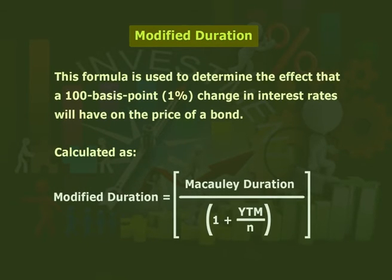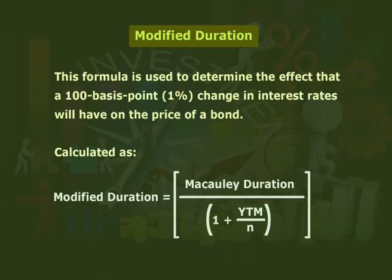This formula is used to determine the effect that a 100 basis points (one percent) change in interest rate will have on the price of a bond. Modified duration is calculated as: Modified Duration = Macaulay Duration / (1 + YTM/n), where YTM is yield to maturity and n is the number of periods.